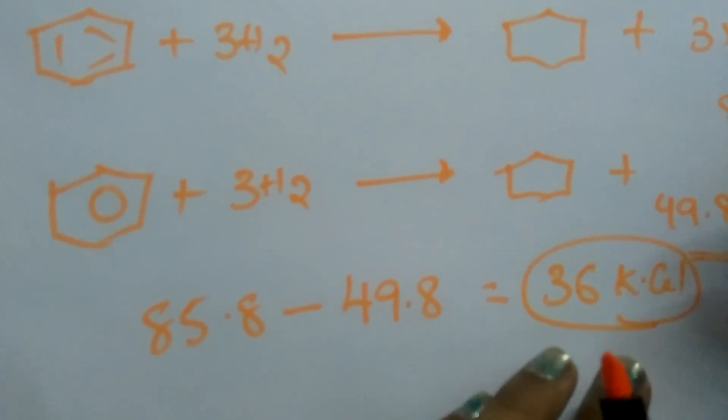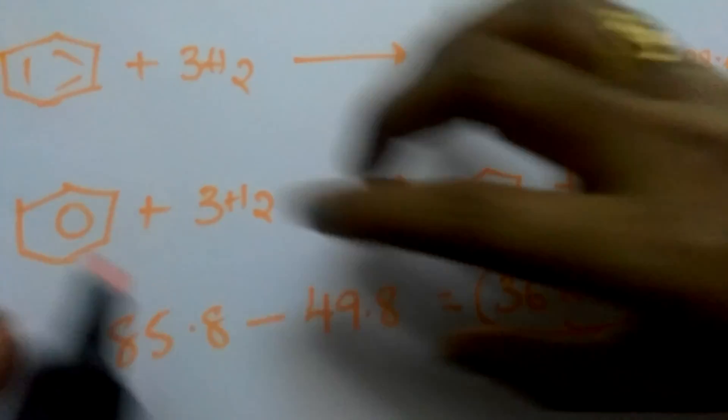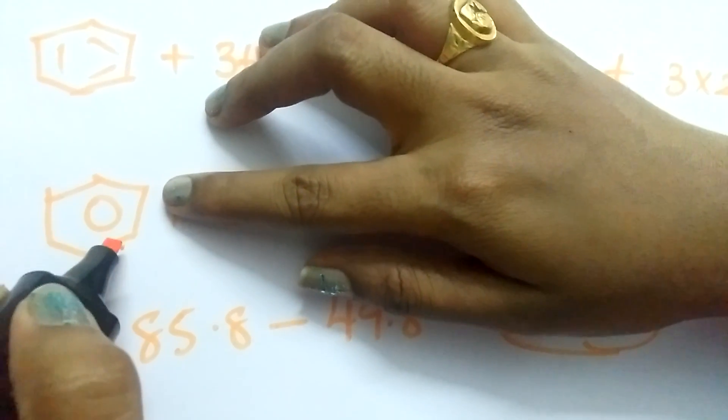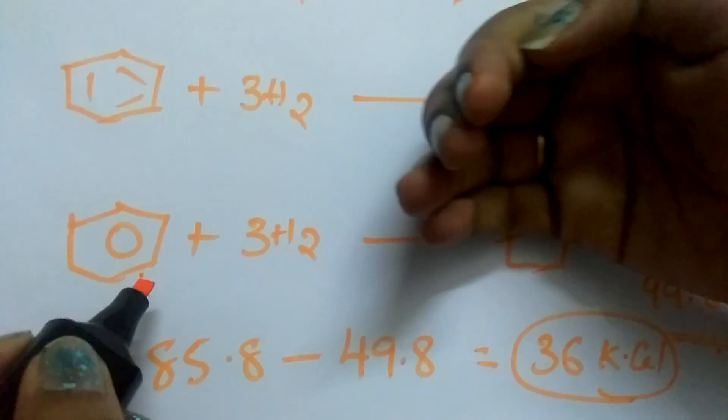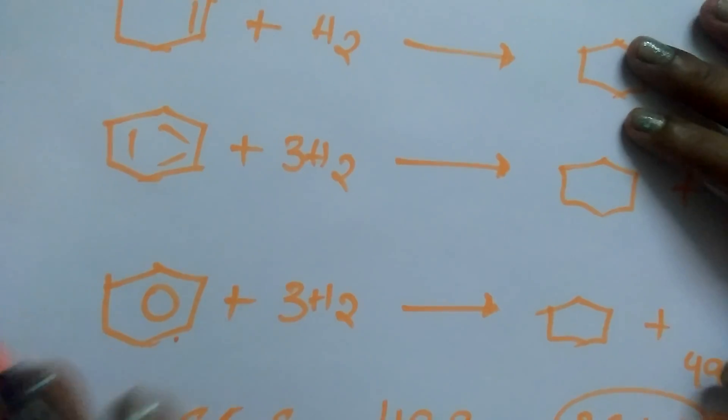The real meaning of resonance energy is that this is the amount of energy required by benzene for the delocalization of electrons. It is lowering its energy and getting stability. This is the structure of benzene.